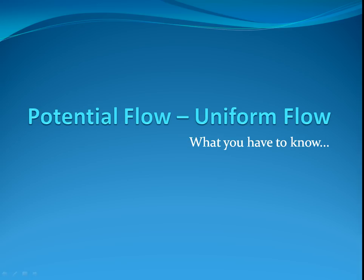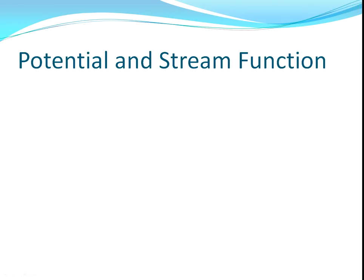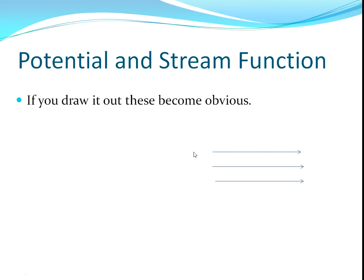The first thing we need to do is get the potential function and the stream function. The way I remember this is to draw a simple diagram — if you draw this diagram, these equations become very obvious. We've got a uniform flow here, this is our velocity v infinity, and these are the streamlines.